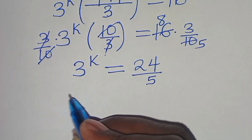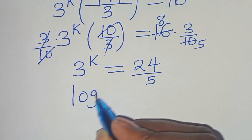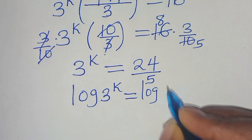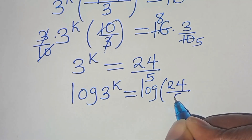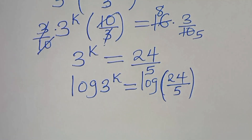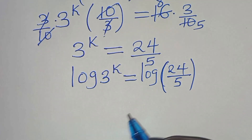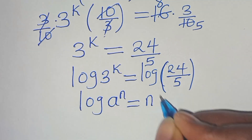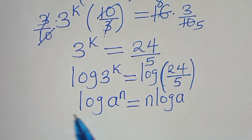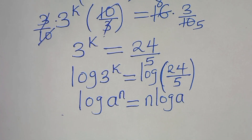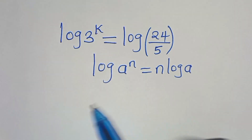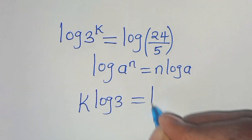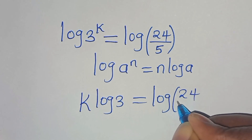To solve for k, we introduce logarithms on both sides: log(3^k) = log(24/5). Using the power property — log(a^n) = n·log(a) — we get k·log(3) = log(24/5).